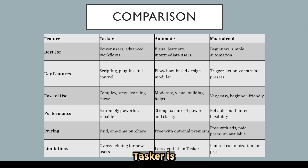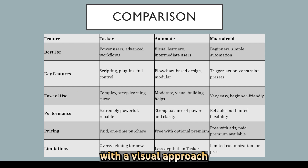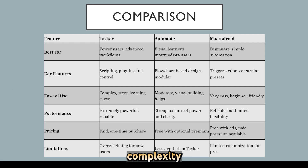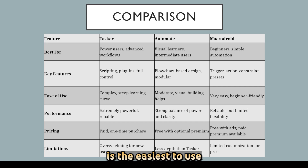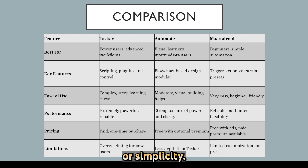Now let's compare them side-by-side. Tasker is the most powerful but hardest to learn. Automate sits in the middle with a visual approach that balances complexity and usability. MacroDroid is the easiest to use but the least customizable. Your choice depends on whether you value power, balance, or simplicity.